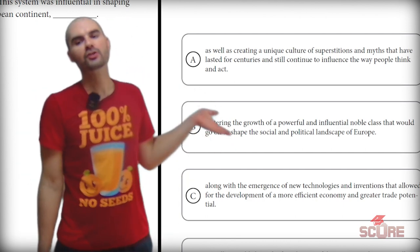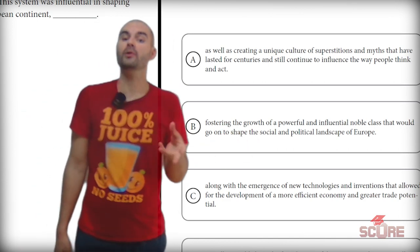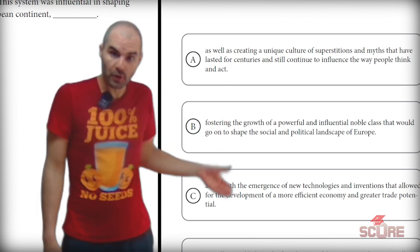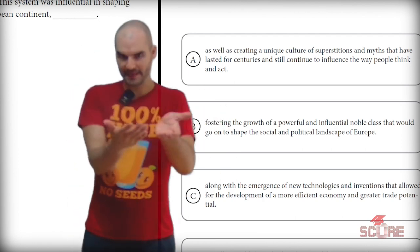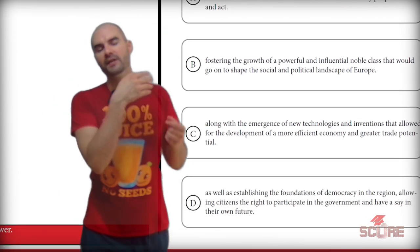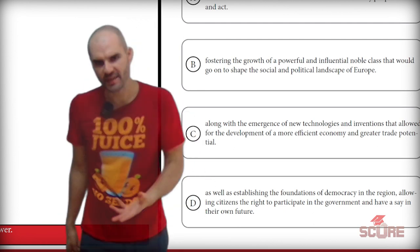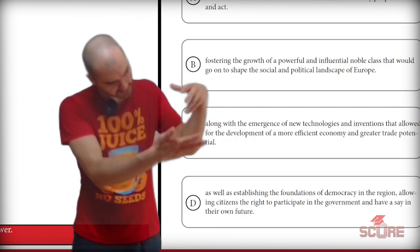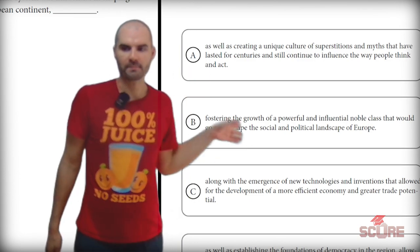The very first option, talking about superstitions and myths, we can rule that out. The growth of a powerful and influential noble class that would shape the social and political landscape of Europe is probably the right answer, because feudalism is a social system that also influences politics — that's what it's about. So B is the right answer. Emergence of new technologies: no. Foundations of democracy: feudalism itself had nothing to do with democracy. We're going to mark B and move on.